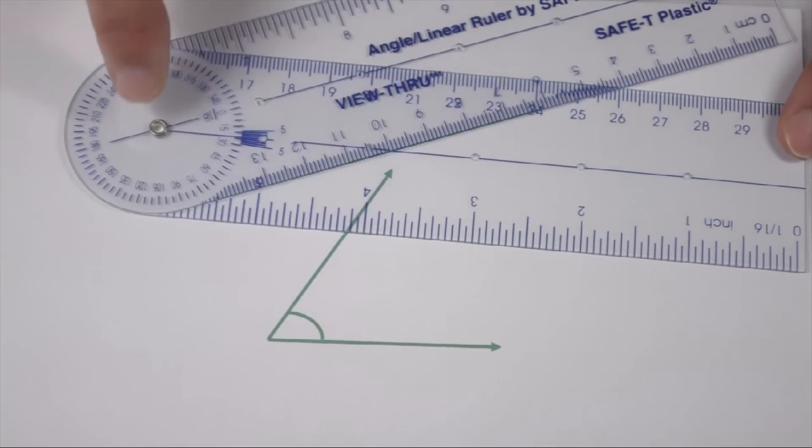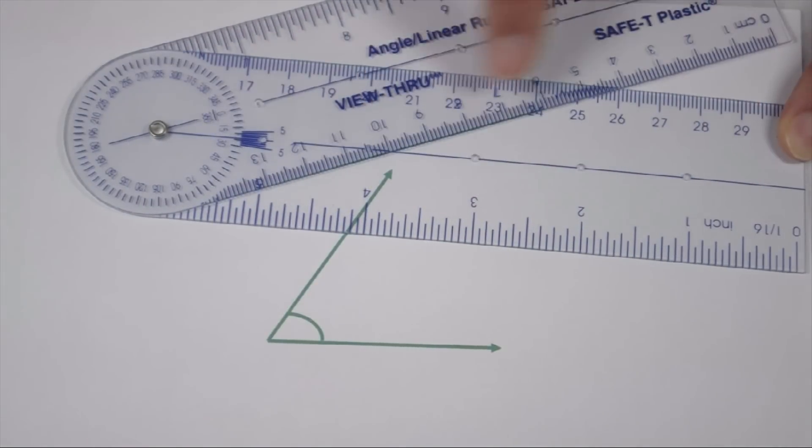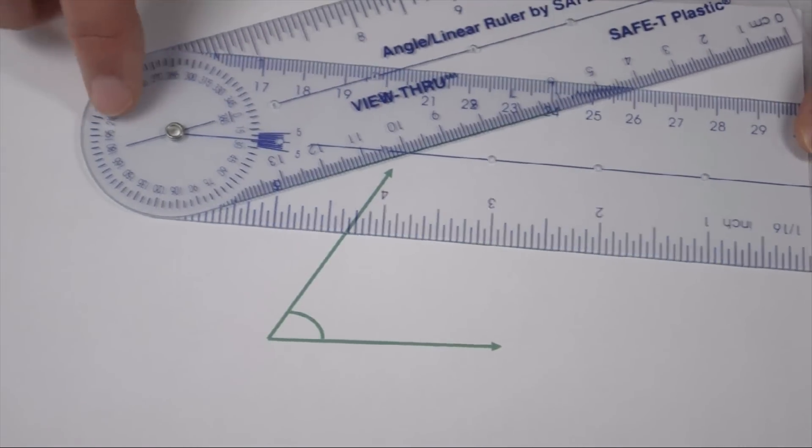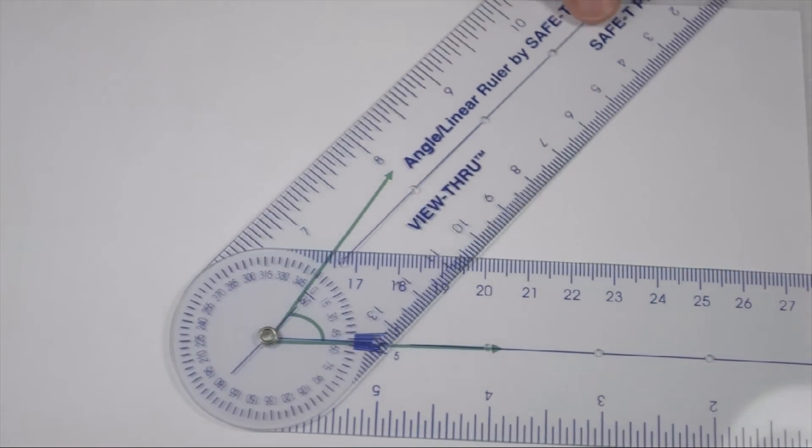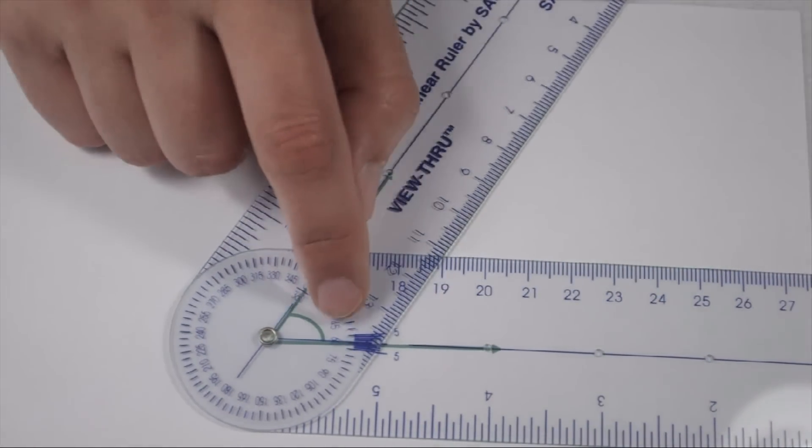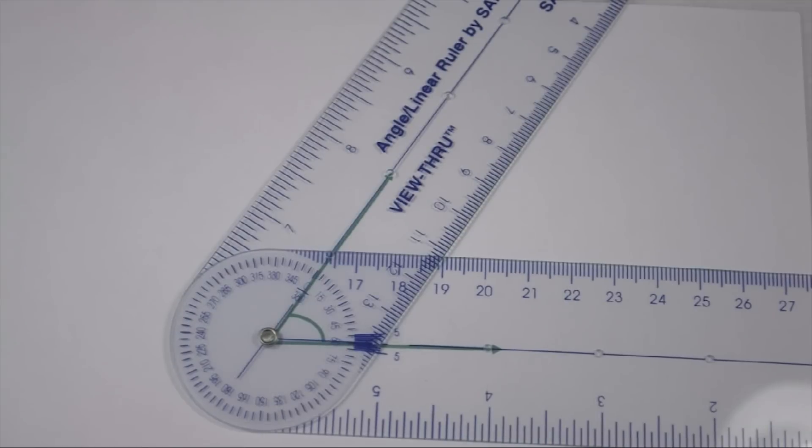We're again going to line up the vertex with the rivet, the bottom ray along this blue line, and then swing our top arm around until it crosses with the other ray. When we do that, we can see that this angle crosses at 60 degrees. So we know we have a 60 degree angle.